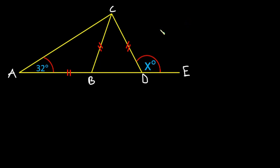Hello everyone. In this video we have a nice plane geometry problem. We have three triangles combined: triangle ABC, triangle ADC, and triangle BCD. We have to find this exterior angle which is x.